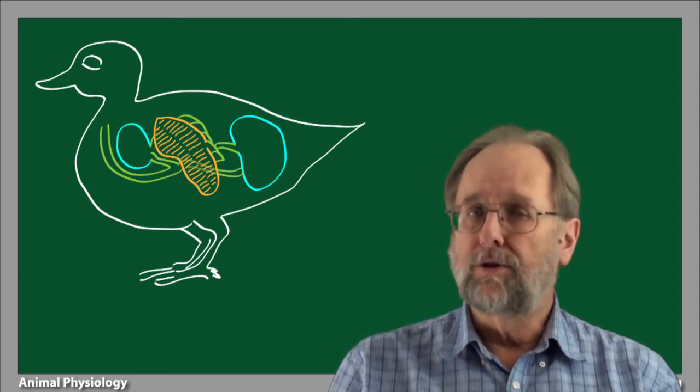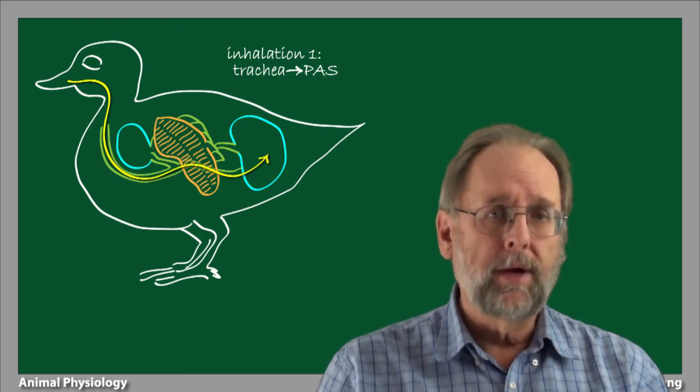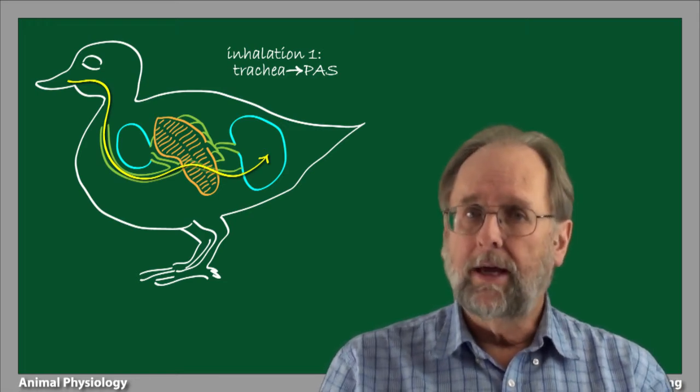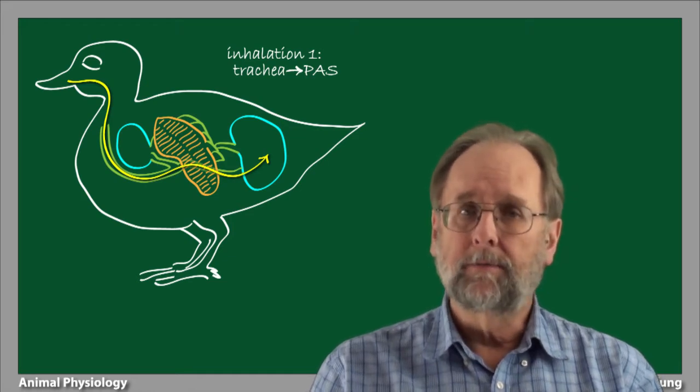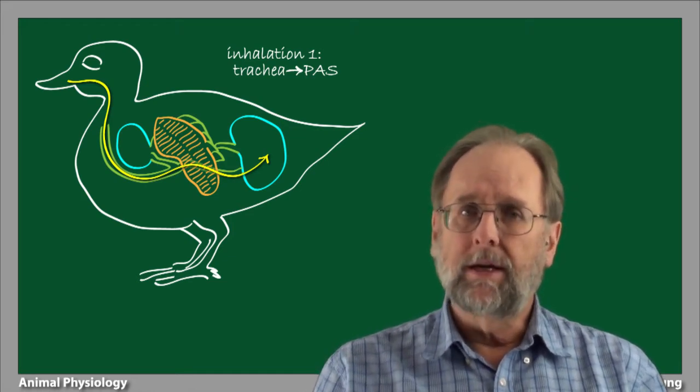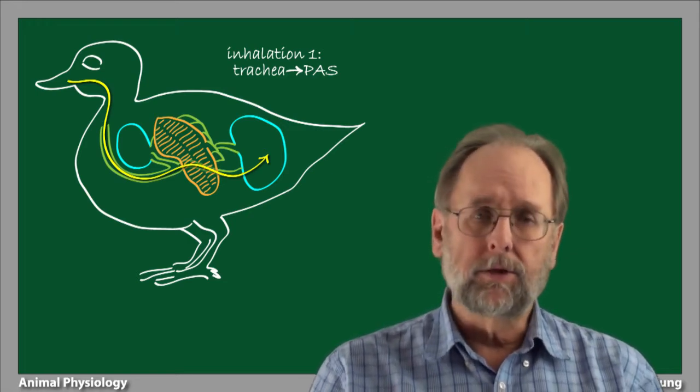During the inhalation phase of the first respiratory cycle, air is drawn in through the nose and mouth, down to the trachea, and directly to the posterior air sacs, bypassing the lung. The expansion of the air sacs is brought about from the downward rotation of the sternum, which acts as a bellows.